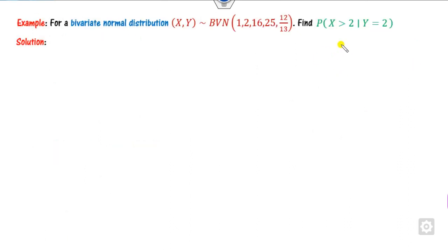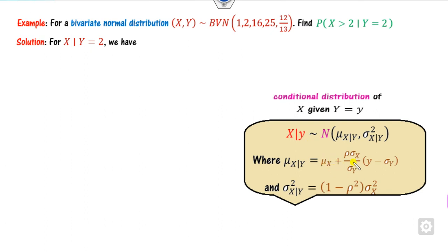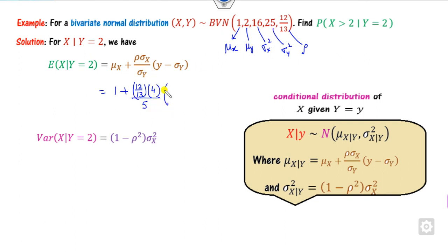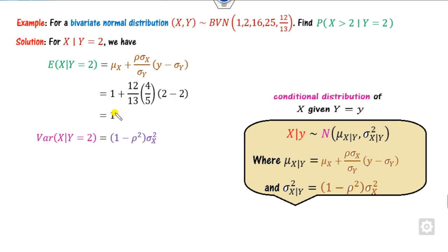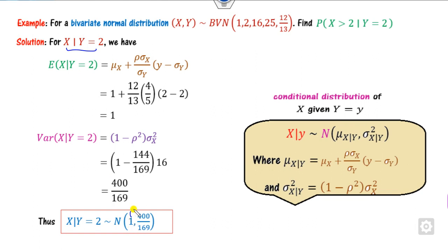The second example is for x given y — now x condition y. We substitute the values: μx = 1, correlation ρ = 12/13, σx = 4, σy = 5, and y = 2. The conditional mean becomes 1 + (12/13)·(4/5)·(2 − 2) = 1 + 0 = 1. For the variance: σx²(1 − ρ²) = 16·(1 − 144/169) = 16·(25/169). Hence x|y follows a normal distribution with this mean and variance.